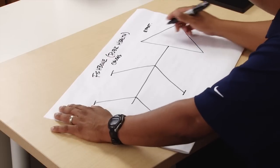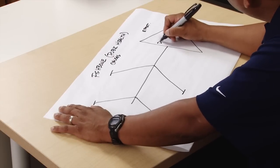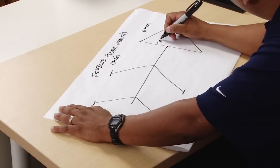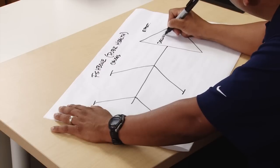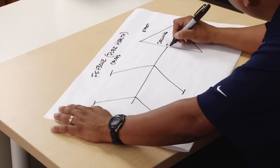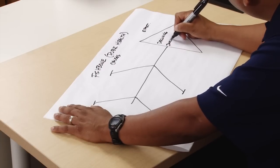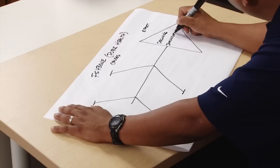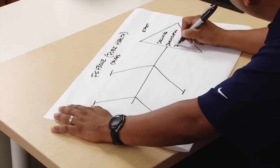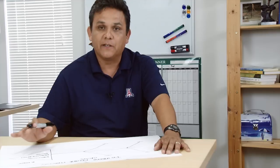For our public health example, we're going to utilize what we see as a problem in some communities, and that is declining immunization rates. We're using this example just because we see it as a problem, and it's a good example to use when we're illustrating something like a fishbone diagram.